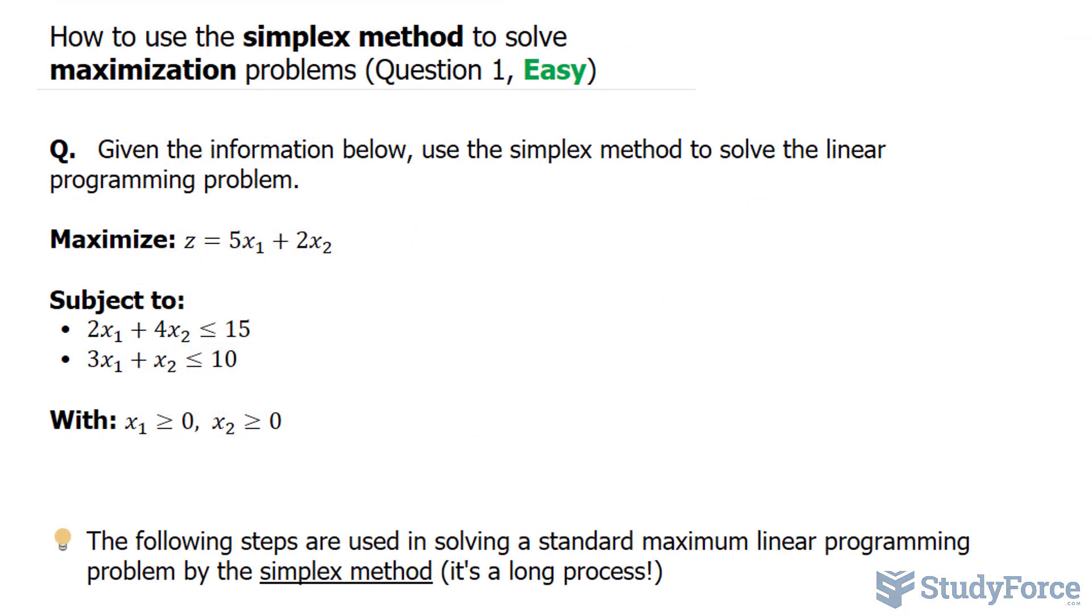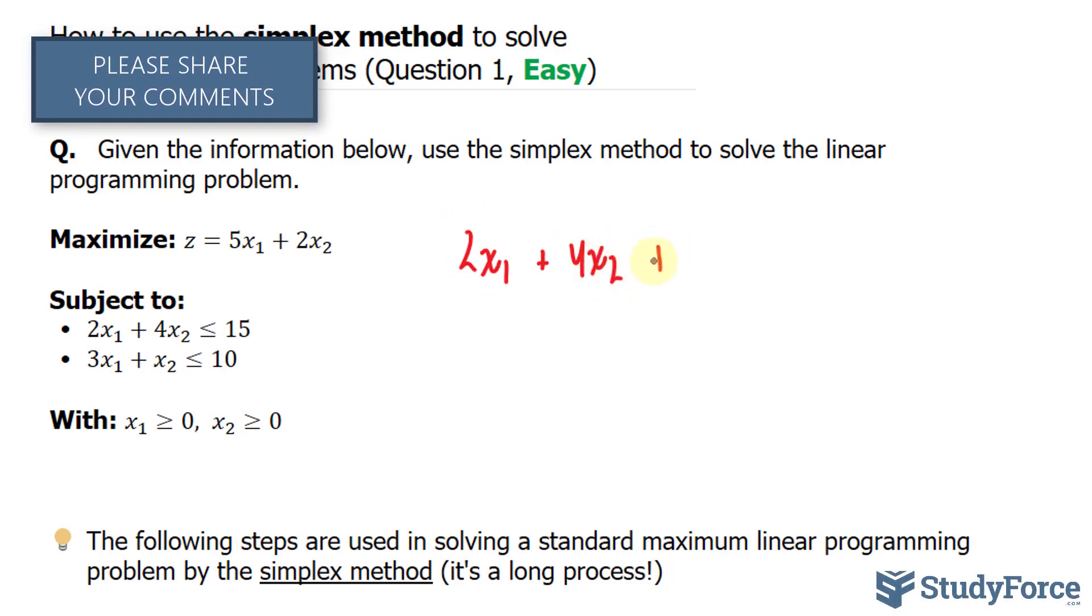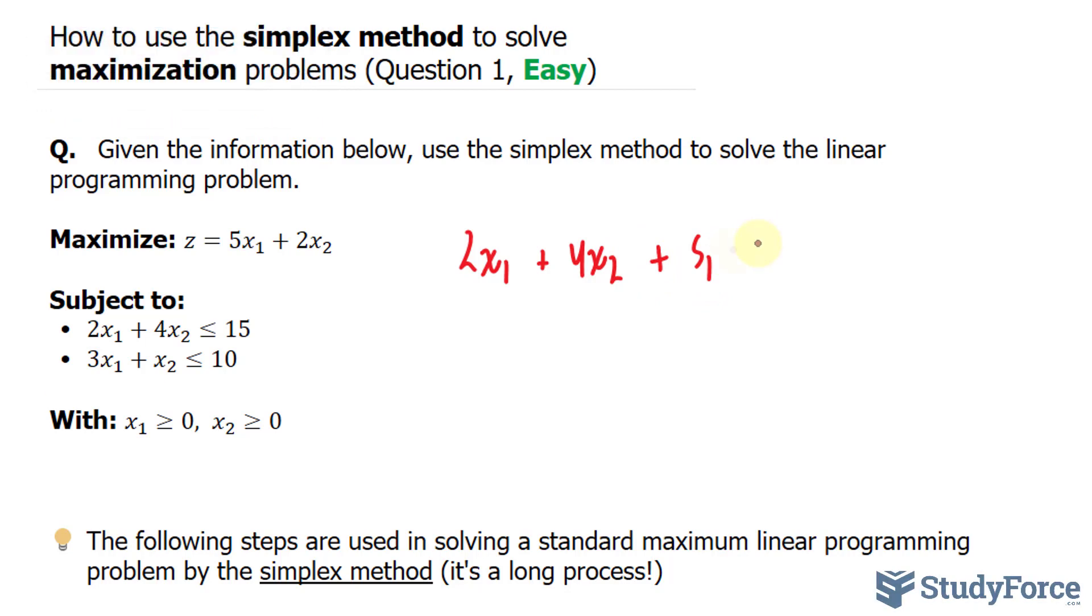The first thing that I want to do is rewrite my constraints so that they include slack variables. I'll explain what a slack variable is in a moment. We have 2x sub 1 plus 4x sub 2 plus one slack variable, which I'll represent as s sub 1, and that is equal to 15. For this constraint, I'll write it as 3x sub 1 plus x sub 2 plus another slack variable, s sub 2, is equal to 10.